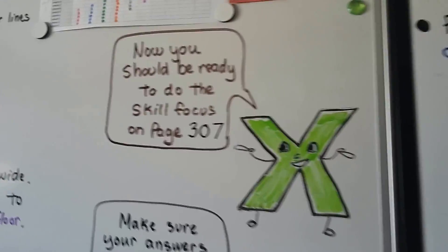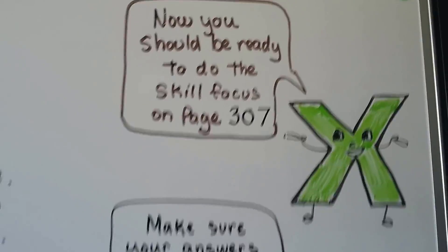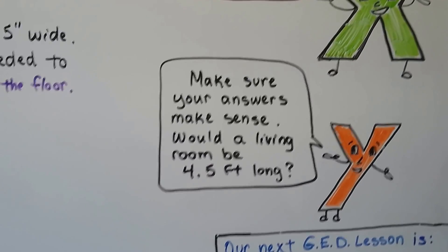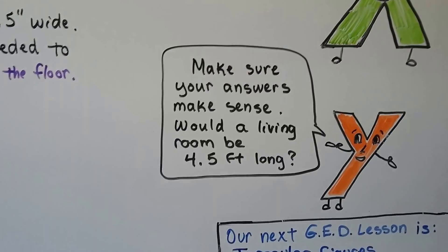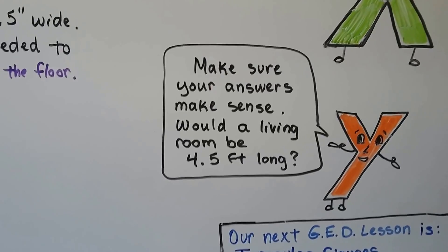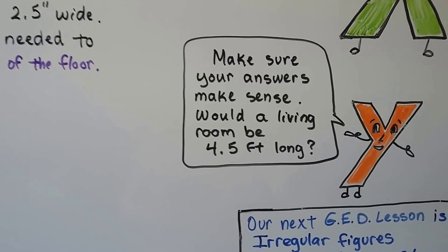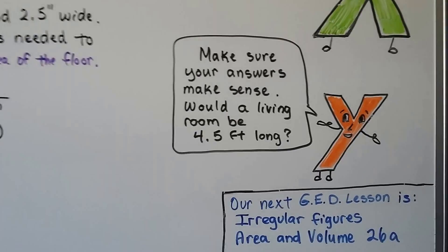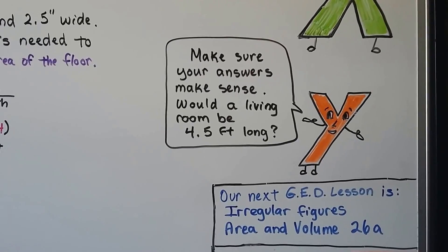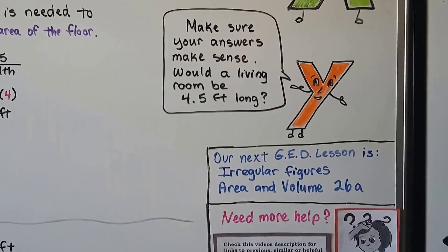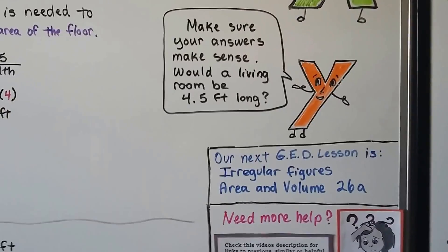So, now you should be ready to do the skill focus on page 307. Just make sure that your answers make sense. When you see a word problem and you do the math and it comes up with a crazy answer, like a living room is four and a half feet long. That doesn't sound right. Or, what if it said a building was only three feet tall? Well, no. Something's wrong. Maybe a decimal point or somehow you did your math wrong. So, make sure they make sense.